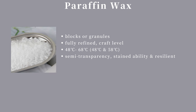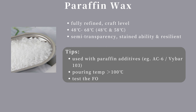The third type is paraffin wax. In handmade candles, go for fully refined paraffin wax. Paraffin wax's semi-transparency, stainability, and tough resilience make it highly versatile for various candle designs. The higher the melting point, the higher the hardness. Commonly used melting points are 48°C and 58°C — 48°C for raw handshake candles, and 58°C for translucent pillar candles. For flawless pillars, pour above 100°C and add paraffin additive AC6 or VEBAR 103 to eliminate air bubbles and white spots.